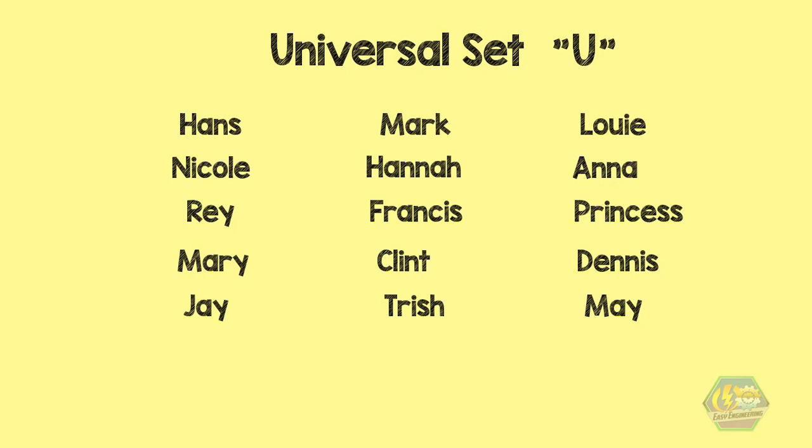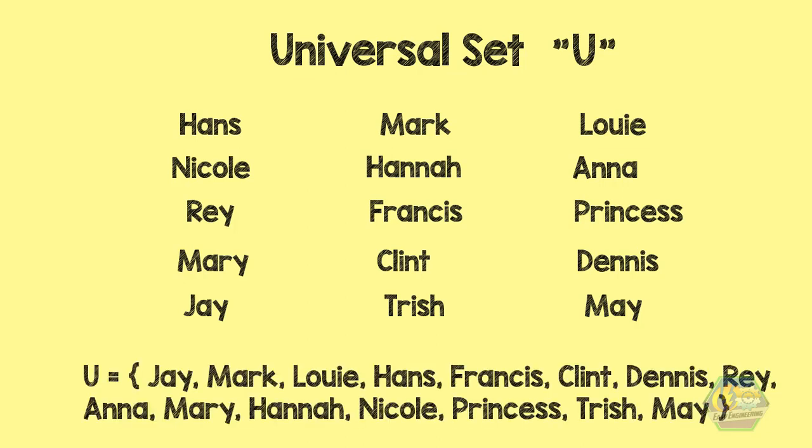So we have U equal to Jay, Mark, Louis, Hans, Francis, Clint, Dennis, Ray, Anna, Mary, Hannah, Nicole, Princess, Trish, and May. We can show the universal set in a Venn diagram by putting a box around the whole thing, like so.